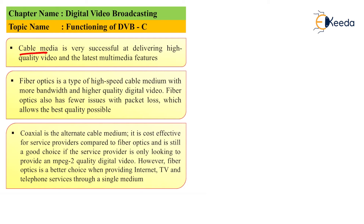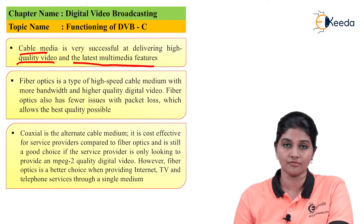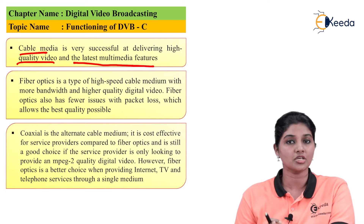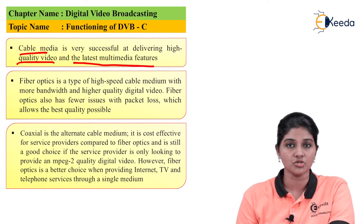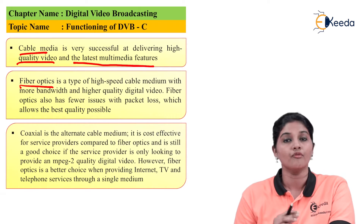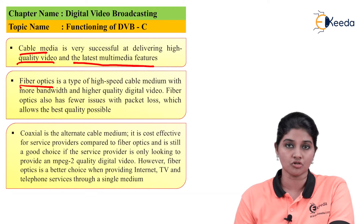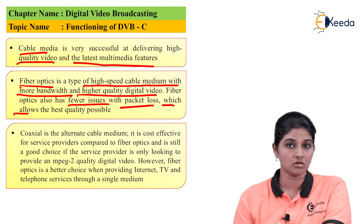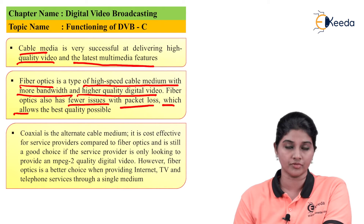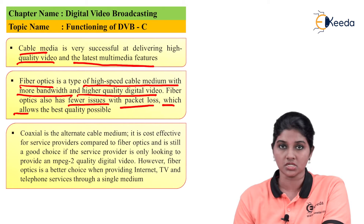Cable media is very useful for delivering quality video and the latest multimedia features, and most of the time cables are used for transmission of signals. Another media that can be used is fiber optic, which uses light for transmission. Fiber optic provides a high-speed cable medium with more bandwidth and high quality digital video signals, though some packet loss issues can affect video quality.